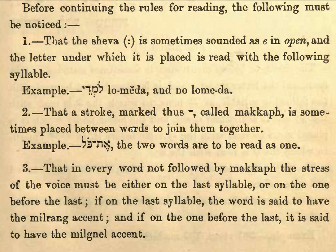That a stroke called the makkaf is sometimes placed between words to join them together like the English hyphen. So: et-kol, et-kol. In this case you only have an accent at the end, specifically marked on the first word, and the two words are to be read as one — which affects where the stress goes. Et-kol.